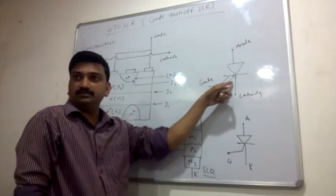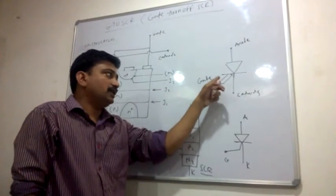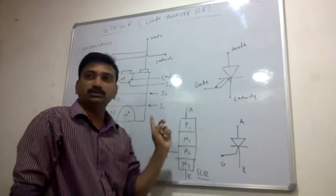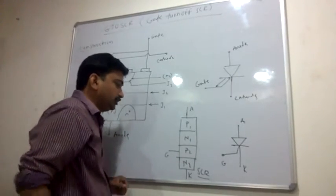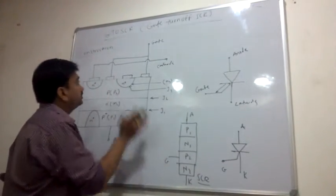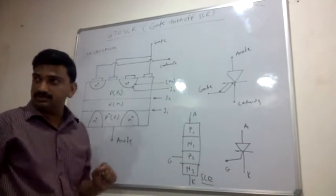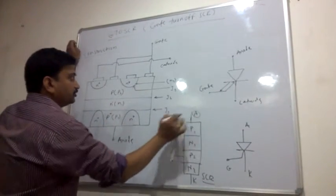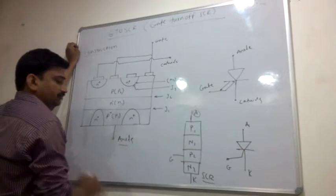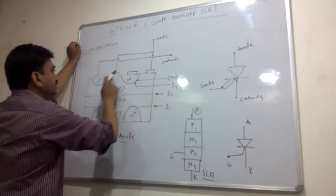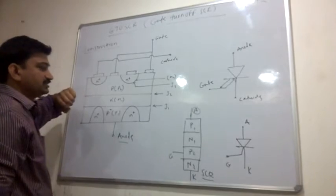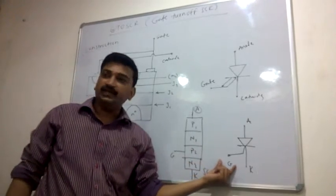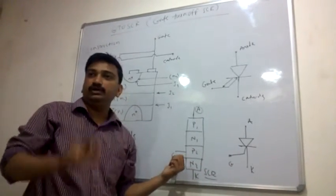Now there is a difference between these symbols and the construction. The GTO has a bi-directional symbol, meaning it is used for both on and off — the same gate terminal is used for turn on and turn off. In the regular SCR, the gate is only used for the turn on purpose. The terminals are the same: anode, cathode, and gate. The major difference is the modification of SCR into GTO to control the gate.